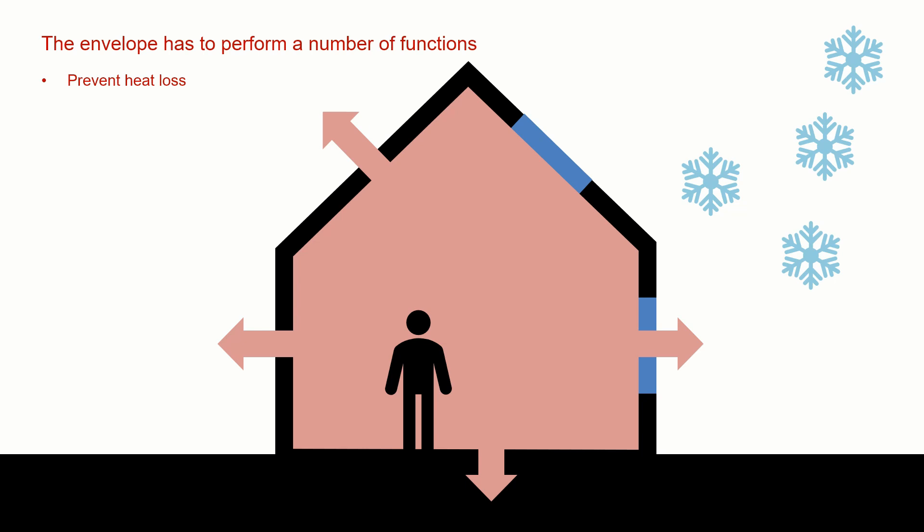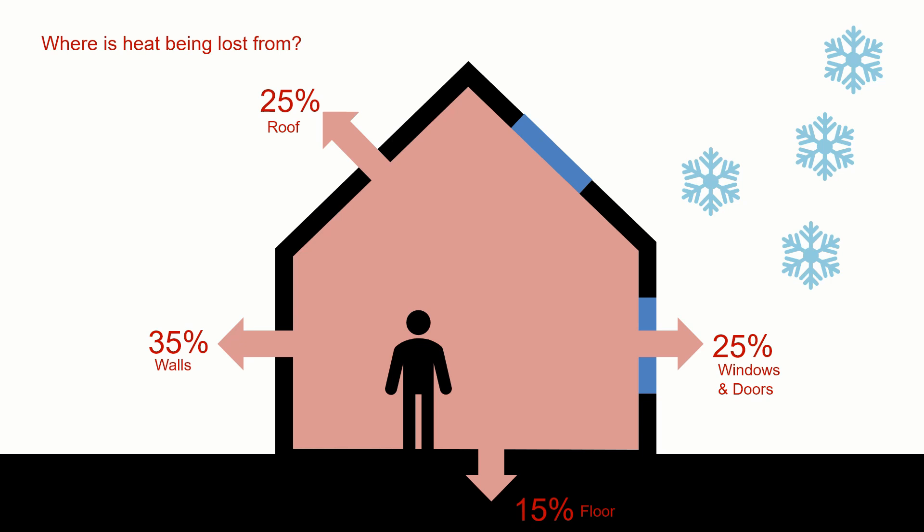We've established that it's an important function of the envelope to prevent heat loss, and the envelope — being every part of the outside of the building, doors, windows, walls and floor — all have to participate in that prevention. If we look at the percentages of where heat is lost, the most significant places are the roof and the walls. Windows and doors account for about a quarter, the floor about 15%, but the vast majority is through walls and roofs. If we can design those efficiently, we can improve occupancy, reduce heating costs and make it more efficient to stay in houses.